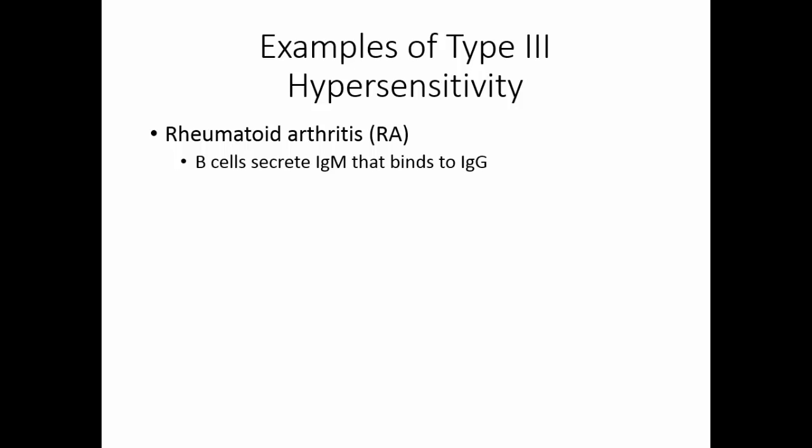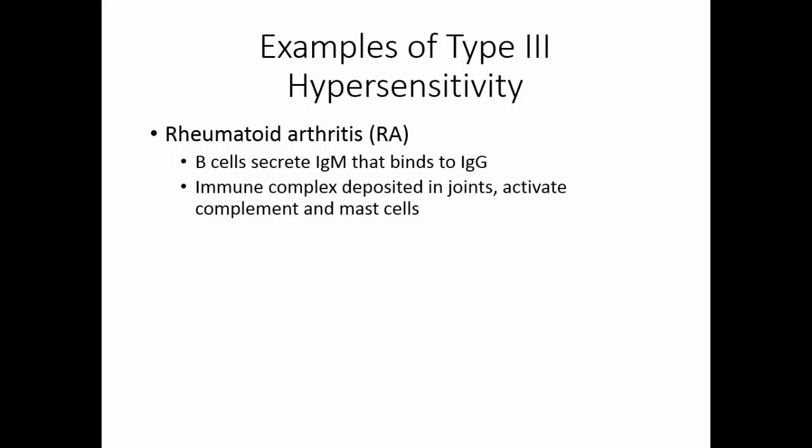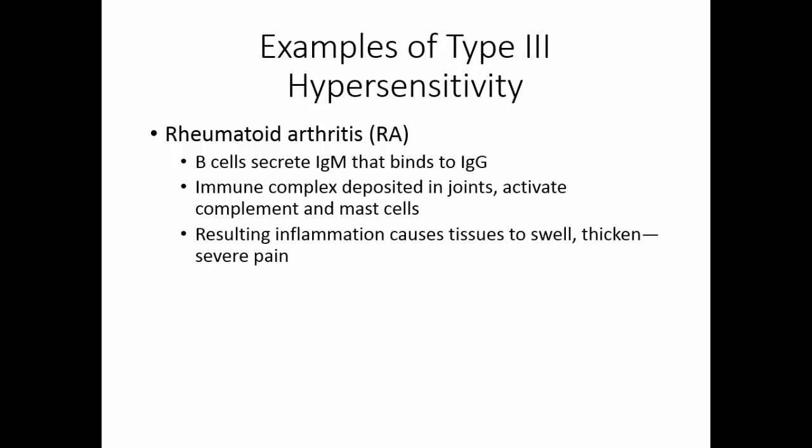Another example of type 3 hypersensitivity is rheumatoid arthritis. In this situation, B cells secrete IgM, and this IgM binds to IgG that's circulating in the body. This antibody-antibody complex is deposited in joints. It activates complement and mast cells. This results in inflammation that causes the joint tissue to swell and thicken and causes severe pain. Because we now have a chronic inflammation that doesn't go away, we continue to eat away at the tissue so the tissue erodes. We replace the tissue with scar tissue and bone spurs, so the joint deforms.